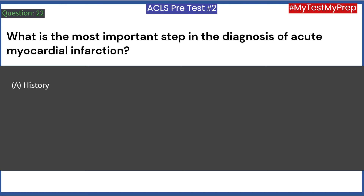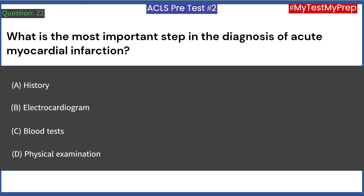What is the most important step in the diagnosis of acute myocardial infarction? A. History. B. Electrocardiogram. C. Blood tests. D. Physical examination. Answer: A. History.